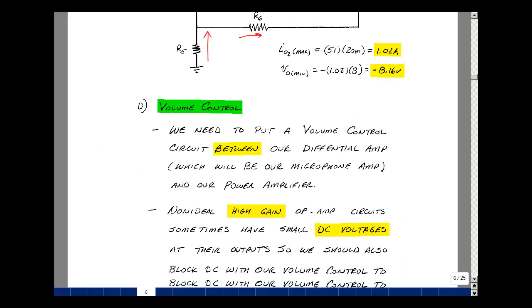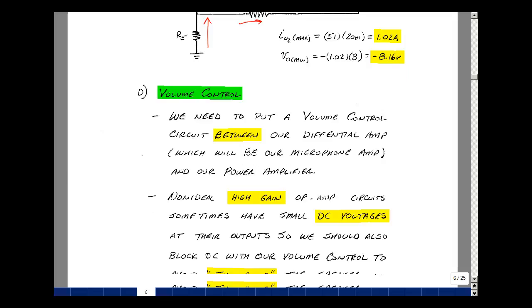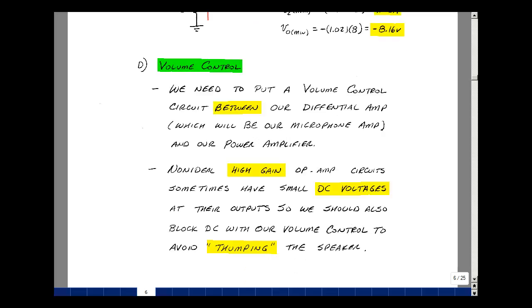I want to add a volume control to our circuit between the differential amplifier, which will hook up to a microphone, and this power amplifier. The size of the signal coming off the microphone is going to vary depending on how loud someone's speaking. With my non-ideal op-amp, there are possibilities of getting small DC voltages showing up at the output. If I apply that to this power amplifier with gain around 11, I'm going to get a DC voltage across the speaker, creating a thumping effect. Put a blocking capacitor in to stop that.